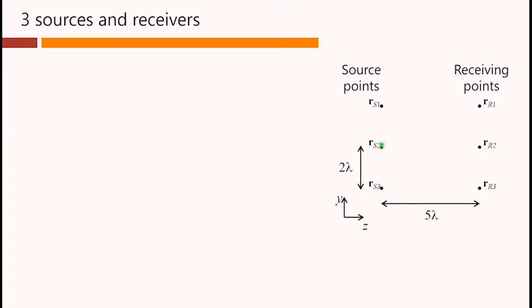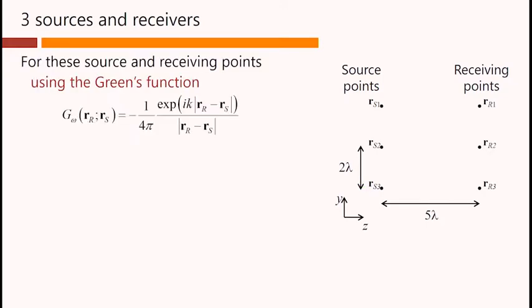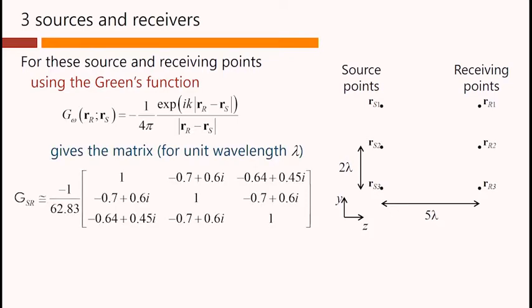And the sources themselves and the receiving points are separated just by two wavelengths. For these source and receiving points, then we can simply use this Green's function to calculate all the matrix elements. It's straightforward.